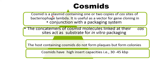Cosmids is a plasmid containing one or two copies of Cos site of bacteriophage lambda. It is useful as a vector for gene cloning in conjunction with a packaging system. The concatemers of Cosmids molecules linked at their Cos sites act as a substrate for in vitro packaging. The host containing Cosmids does not form plaques but forms colonies.